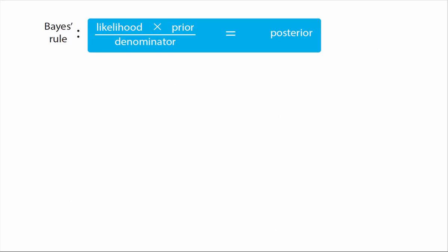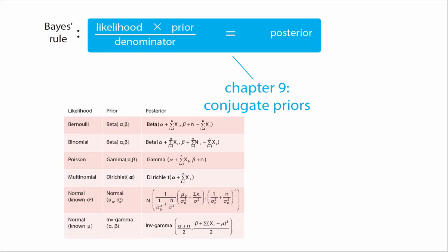There are particular choices of likelihood and prior distributions which mean that we can actually exactly calculate the posterior. These come under the heading of conjugate priors, which we discuss in chapter 9. With conjugate priors, we don't need to do any calculation at all - we just look up the result in a table. This really is Bayesian inference made easy.